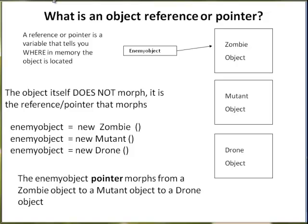Now at a different level of the game, I say enemy object equals new mutant. The variable morphs — the zombie object did not become a mutant object. The variable that points to the zombie object now points to a mutant object, therefore that variable has morphed. It's the variable that morphs, not the individual object.